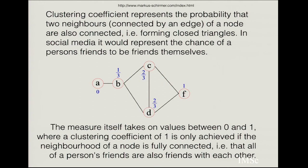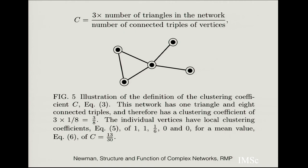The clustering coefficient represents whether two neighbors connected by an edge of a node are also connected to each other — the tendency toward forming closed triangles. In a social sense, this is the probability that one individual's friends are also friends with each other. The clustering coefficient equals 1 only if the neighborhood of a node is fully connected. More formally, it is 3 times the number of triangles in the network divided by the number of connected triples of vertices. For the example shown, this gives a clustering coefficient of 3/8.